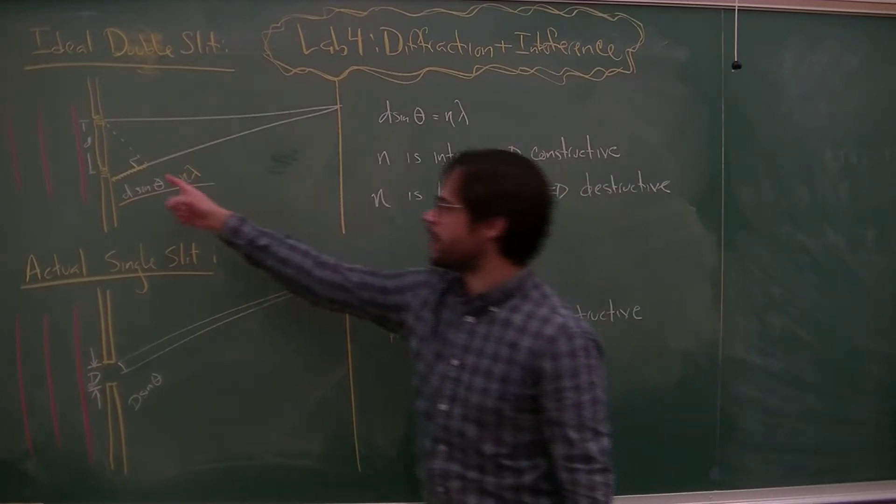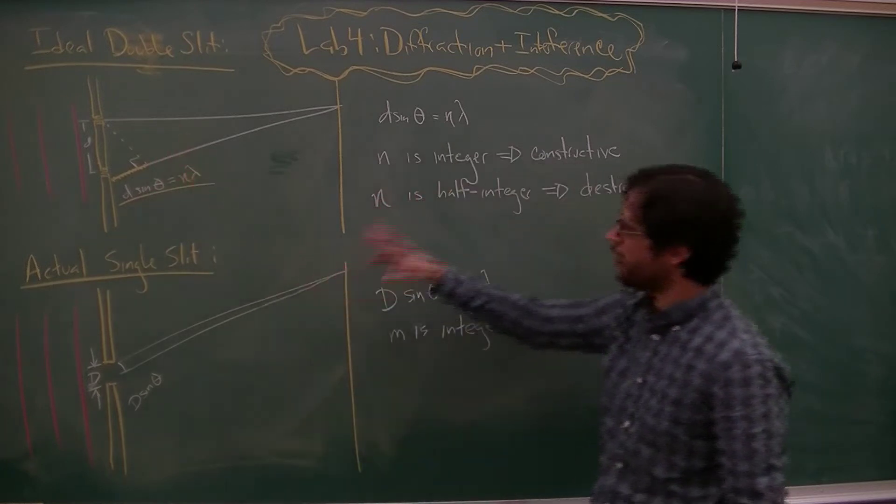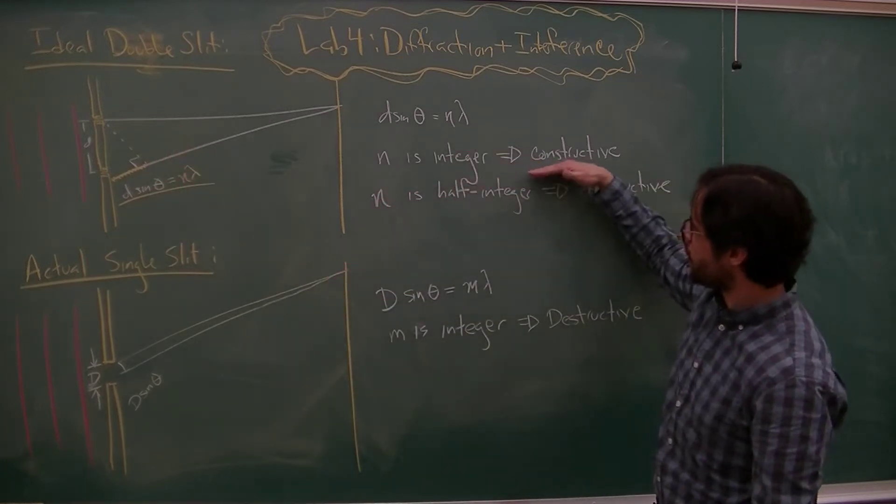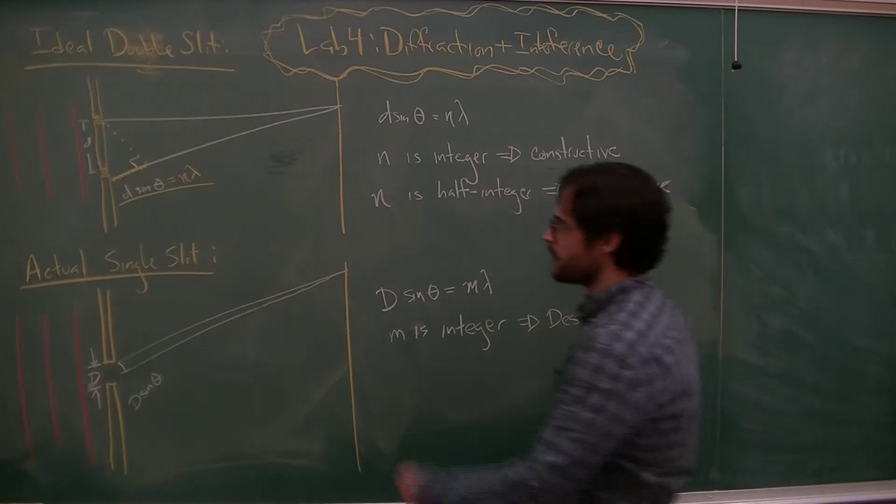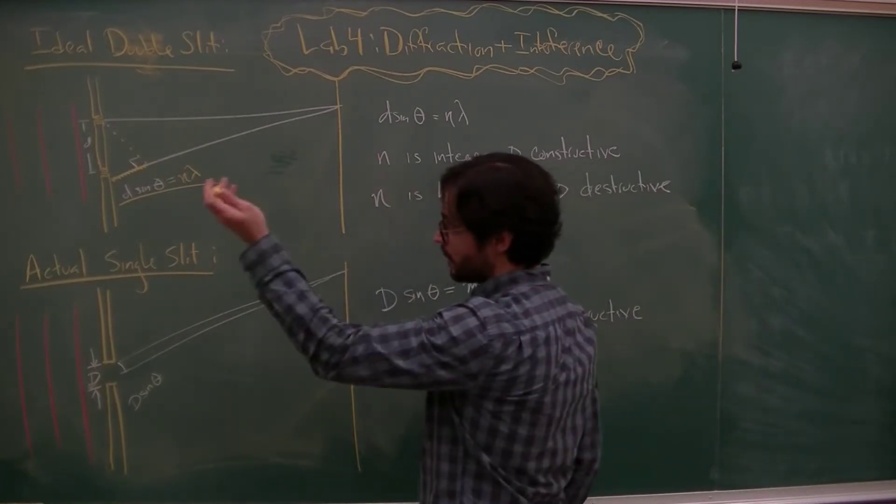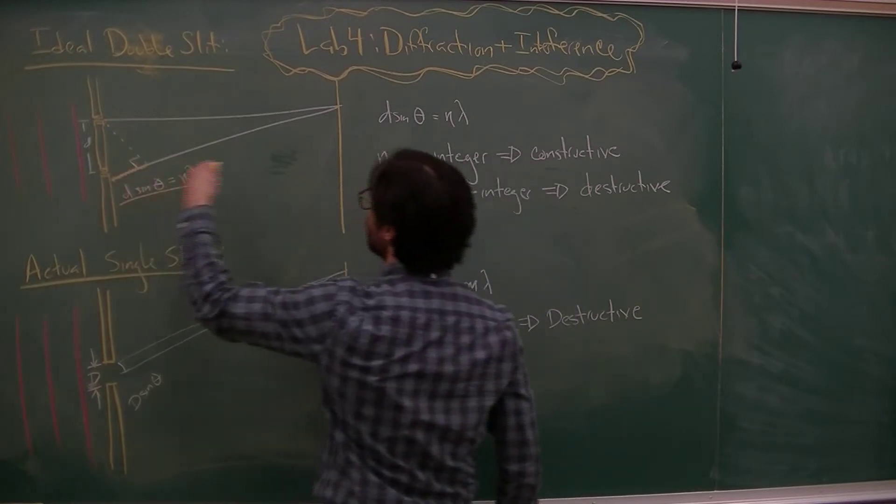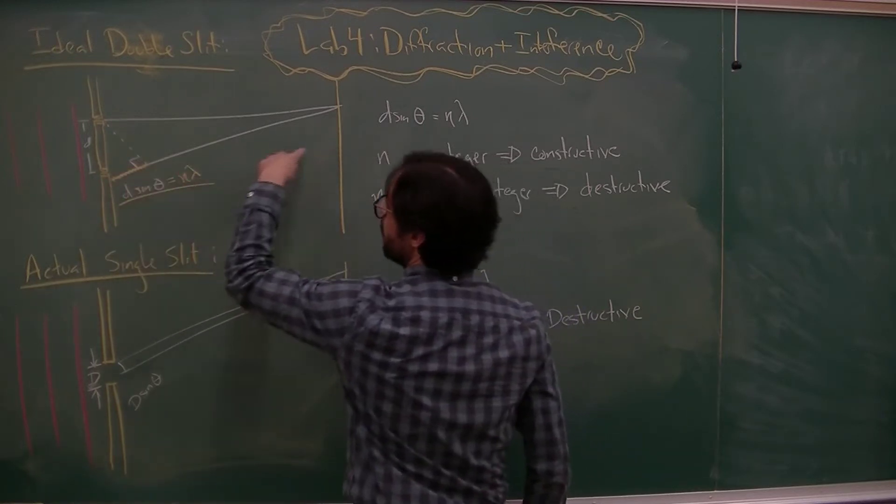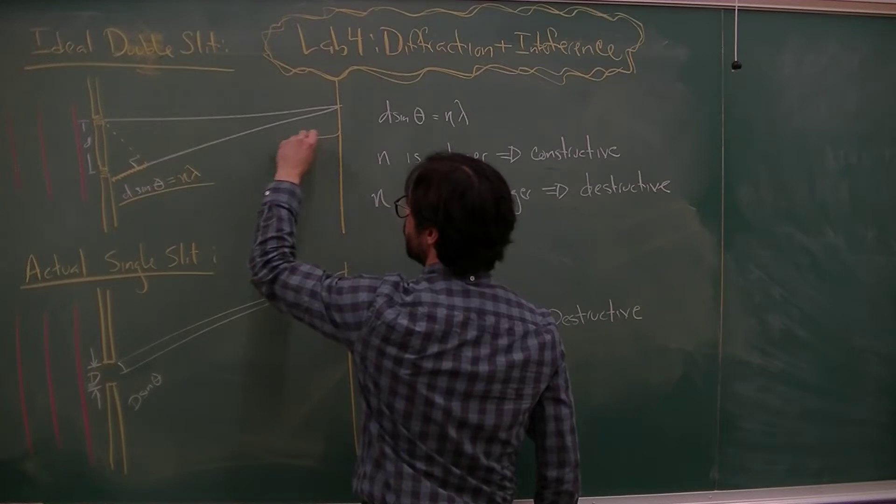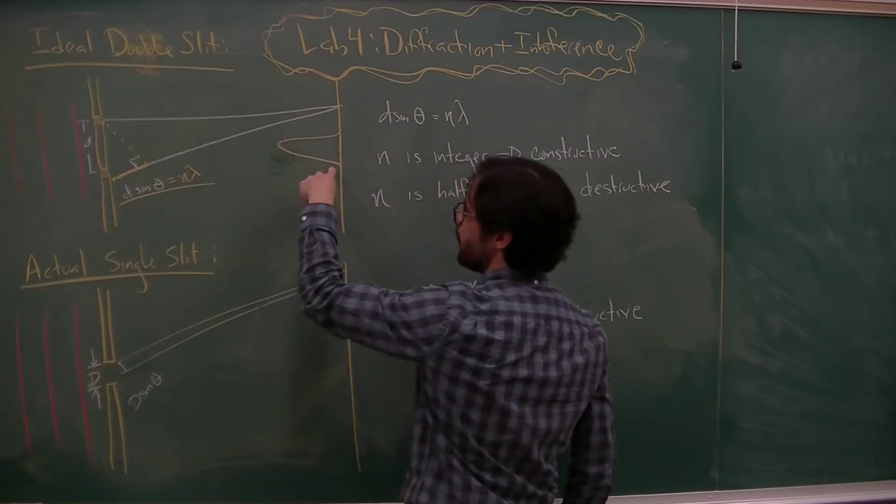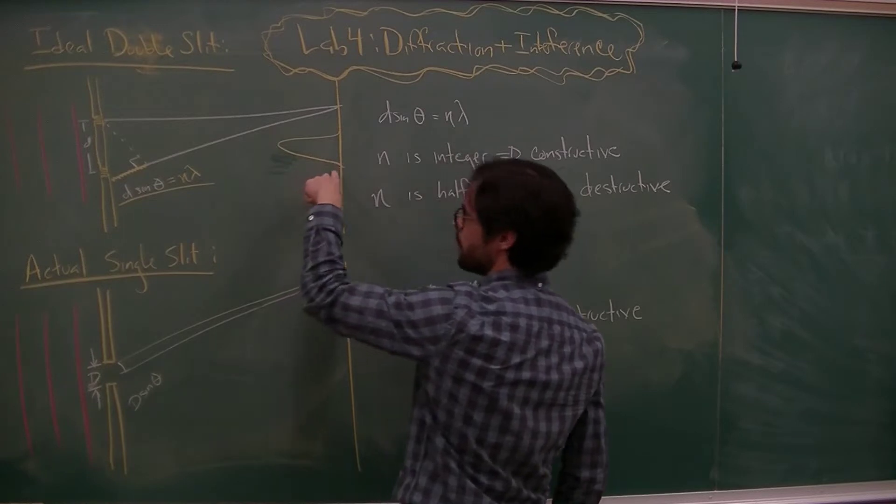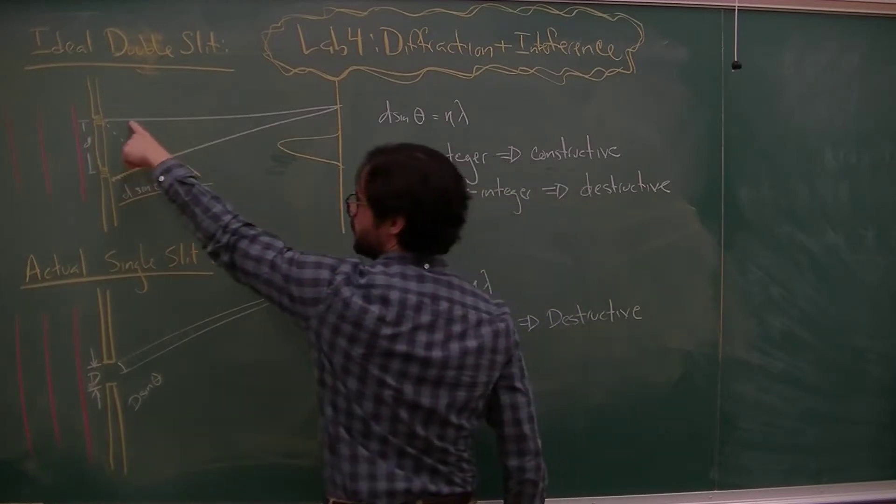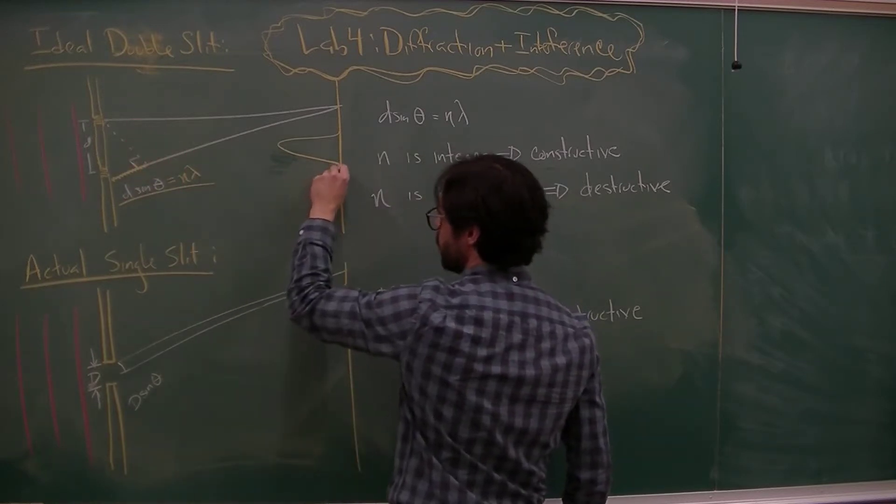So light from this travels farther than light from that or the other way around. And as n is integer constructive, n is half integer positive or negative, I get destructive. So what that means in an actual experiment, if I have a double slit, what I should see is halfway in between, they travel the same length, I should get constructive, so I should have some high intensity, and then I should get this travels half a wavelength, this one travels half wavelength longer than that ray, so they get destructive, constructive, destructive.